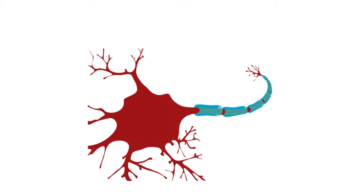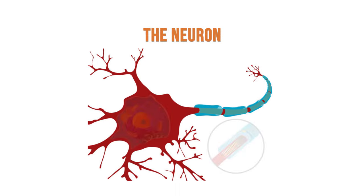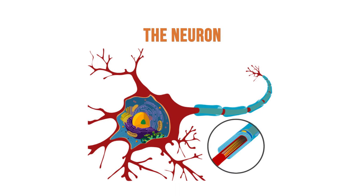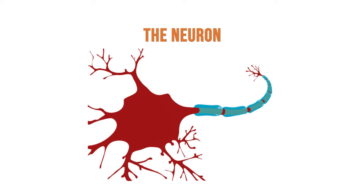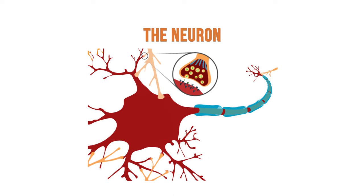Welcome back to our lesson on the nervous system. In this video, we will talk about the primary cell of the nervous system, the neuron. We will talk about the structure of neurons and also how they come together to form an entire network of nerve cells. Great, so let's begin.